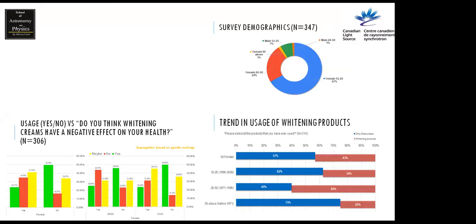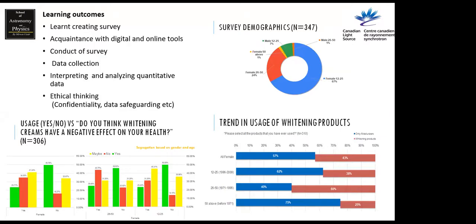Students learned to create surveys in Google Forms and gained familiarity with digital tools. While translating and audio-dubbing the survey, they learned about survey conduct and data collection. They learned basic data analysis and visualization using Excel features like pivot tables, histograms, and pie charts, which they had little prior experience with. Most importantly, they learned about ethical thinking — considering privacy, confidentiality, data safeguarding of respondents, and appropriate inclusion of questions to avoid being insensitive to the audience.